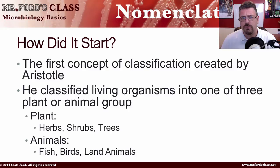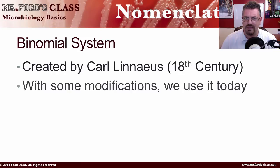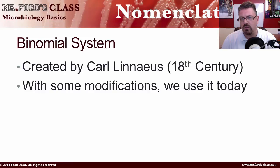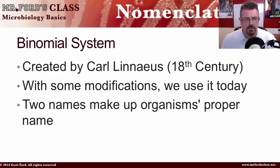We don't use that classification system anymore. Instead, we use something called a binomial naming system — a binomial system — created back in the 18th century by a gentleman named Carl Linnaeus. With some modifications, this has evolved over the years, but this is what we more or less use today for our nomenclature. You might not be familiar with the term binomial system, but I guarantee you are familiar with some organism names using this system. An organism gets two names that make up its proper name. My proper name is Scott Ford — I have a first name and a last name. Well, organisms get a first name and a last name. The two-name system is known as a binomial.